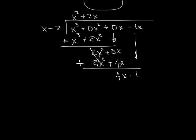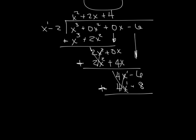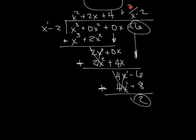We bring down the minus 6. Now x goes into 4x: 1 minus 1 is 0, so we get plus 4. We multiply 4 times x to get 4x — matching above — and 4 times negative 2 gives negative 8. We subtract: those cancel. Negative 6 minus negative 8 is negative 6 plus 8, which is positive 2. That's our remainder, so the final answer is x squared plus 2x plus 4 plus 2 over x minus 2.